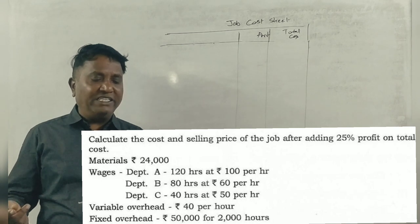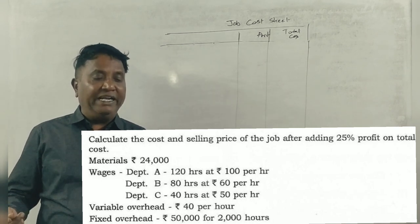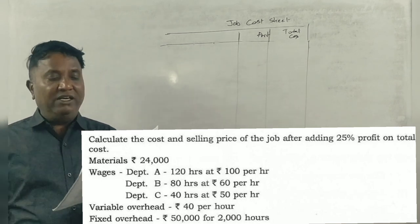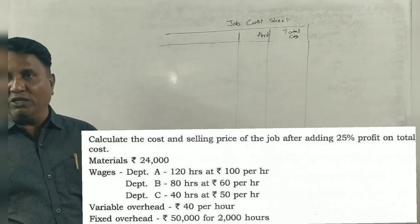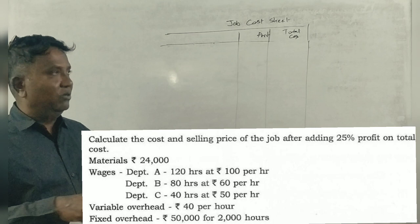Materials: ₹24,000. Wages - Department A: 120 hours at ₹100 per hour, Department B: 80 hours at ₹60 per hour, Department C: 40 hours at ₹50 per hour. Variable overheads: ₹40 per hour. Fixed overheads: ₹50,000 for 2,000 hours.